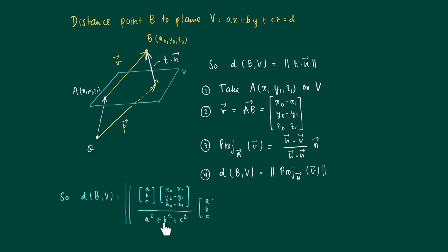The length of this vector is given by multiplying through here: a times (x0 minus x1) plus b times (y0 minus y1) plus c times (z0 minus z1). And we take all the expressions a times x0, b times y0, c times z0 together.